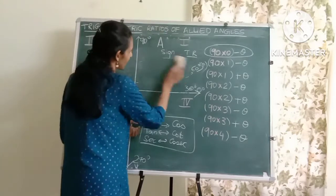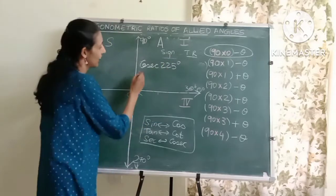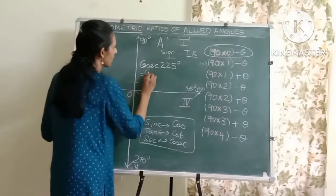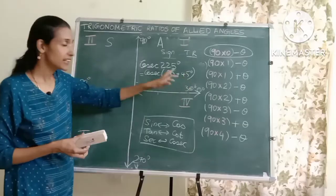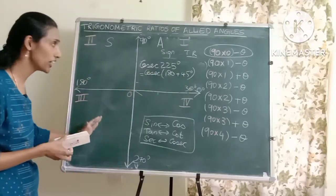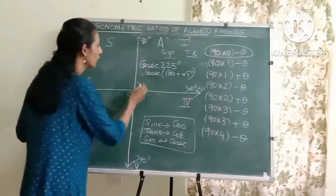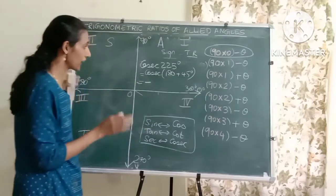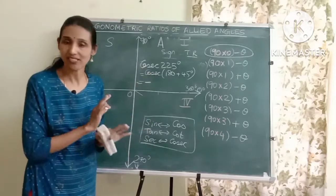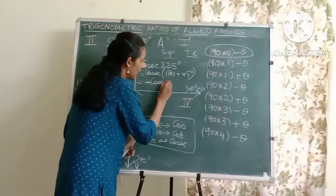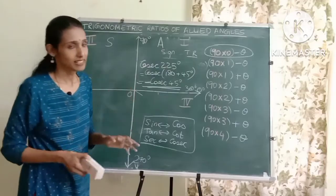For 180 plus theta, let's take cosec of 225 degrees. I can write it as cosec of (180 plus 45). This goes into the third quadrant where only tan and cot are positive, whereas this is cosec — so the sign becomes negative. Since 180 lies on the x-axis, the trigonometric ratio does not change; it remains cosec. So cosec of 225 equals minus cosec 45 degrees.